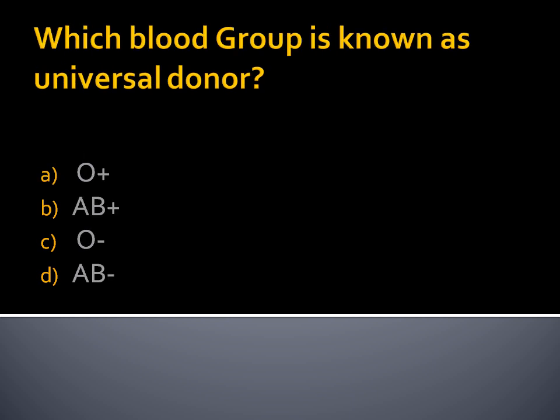Which blood group is known as the universal donor? Which blood group is the universal donor? Option A, O positive. Option B, AB positive. Option C, O negative. Option D, AB negative.